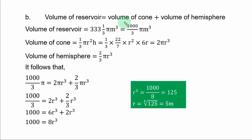Part b of the question. Volume of the reservoir is equal to volume of the cone plus volume of the hemisphere. From the question, the volume of the reservoir is this. If you convert it to improper fraction, you have 1000/3 π cubic meters.